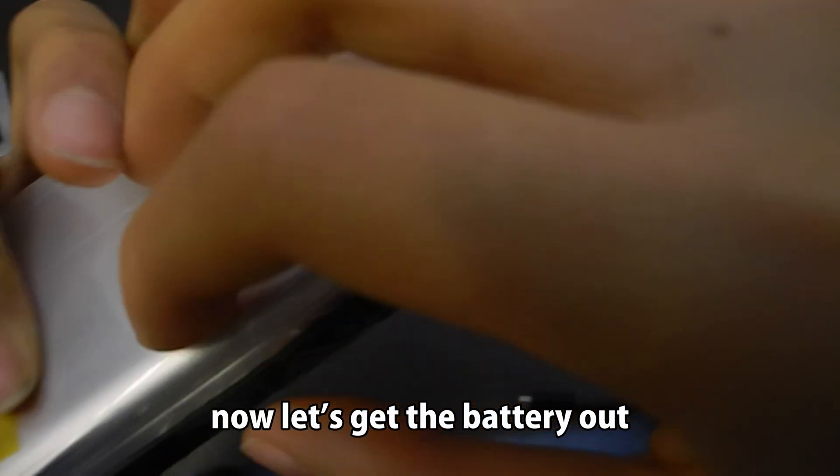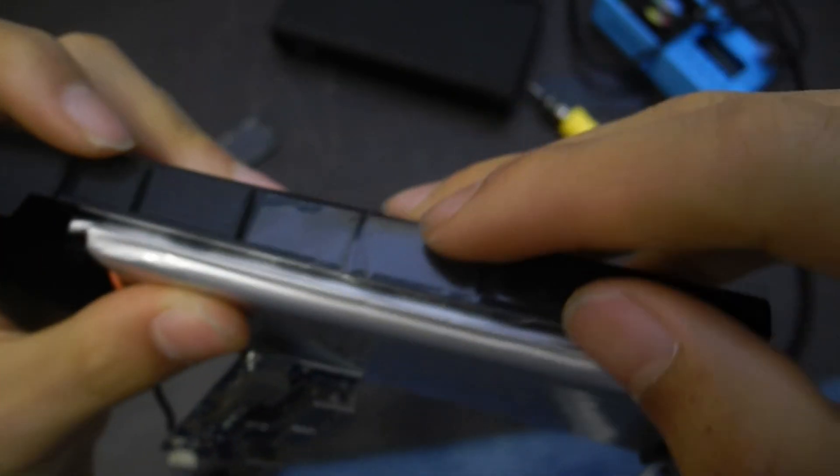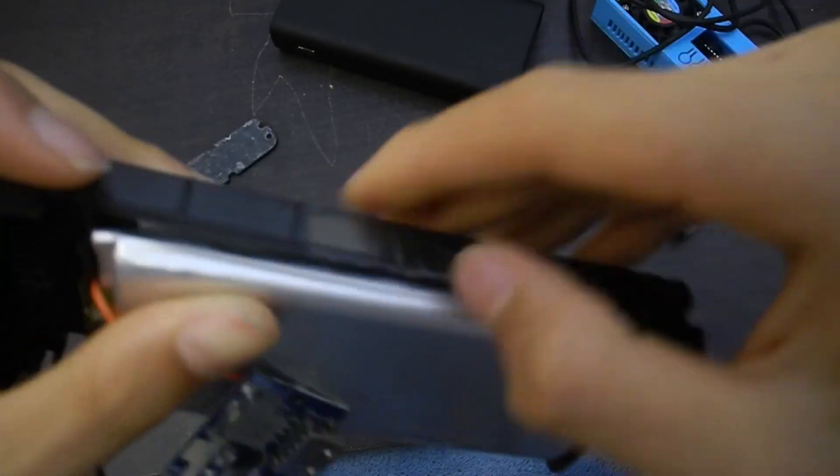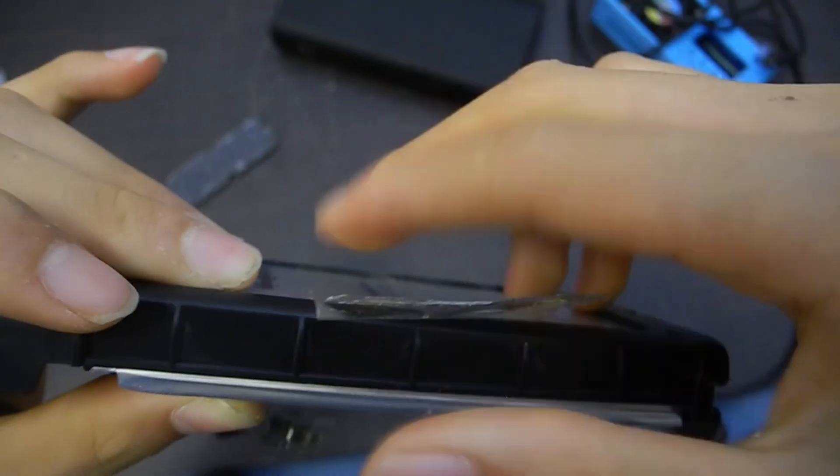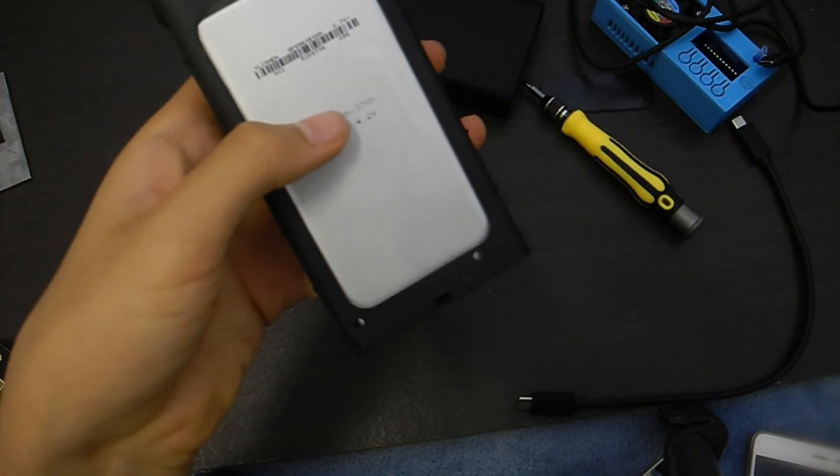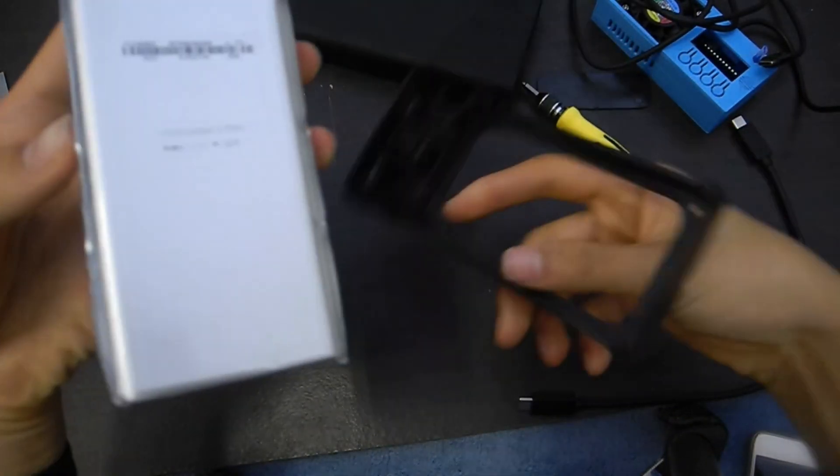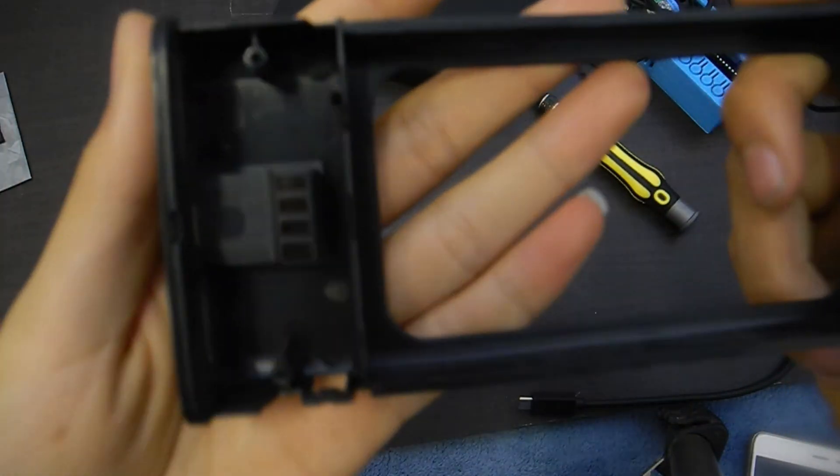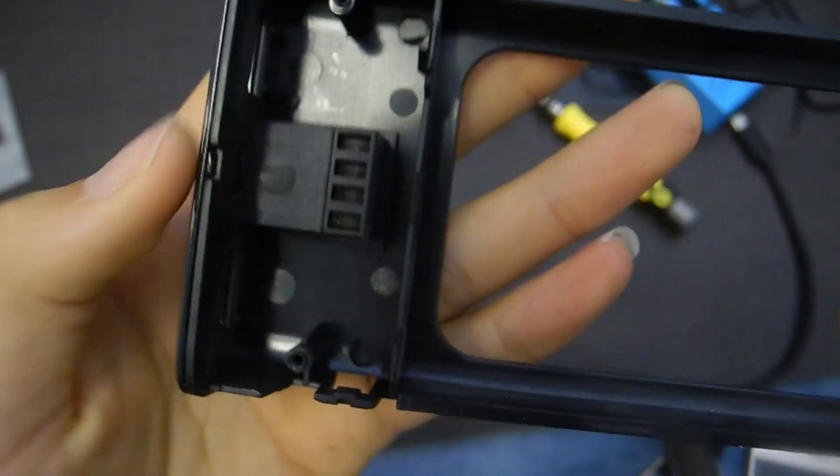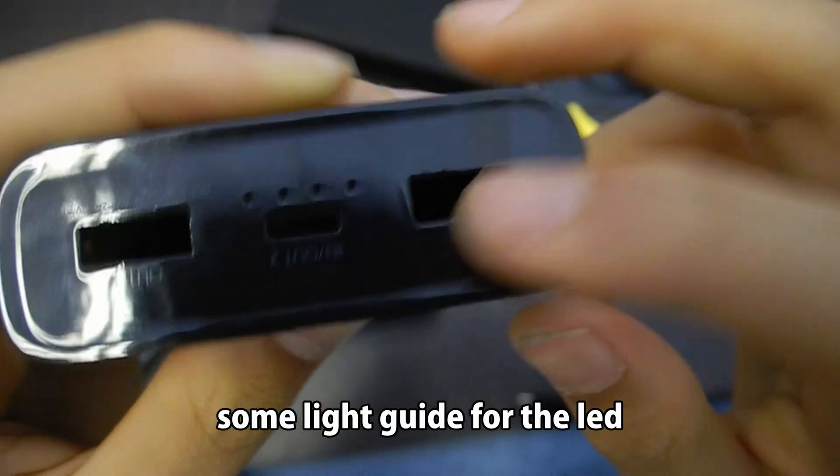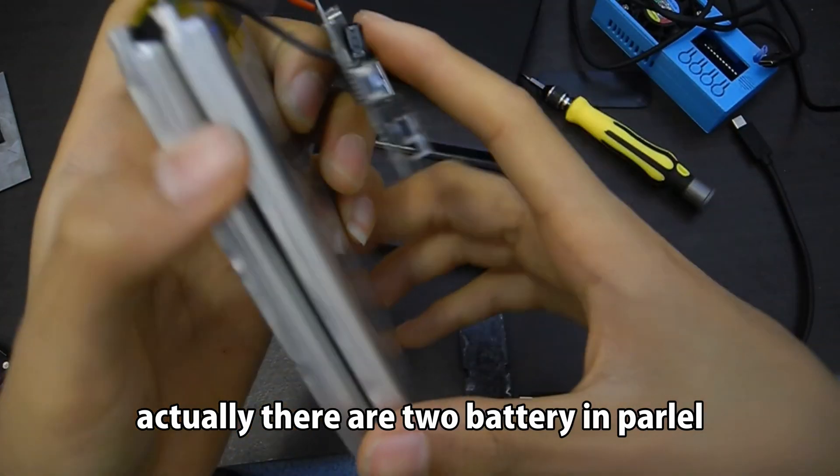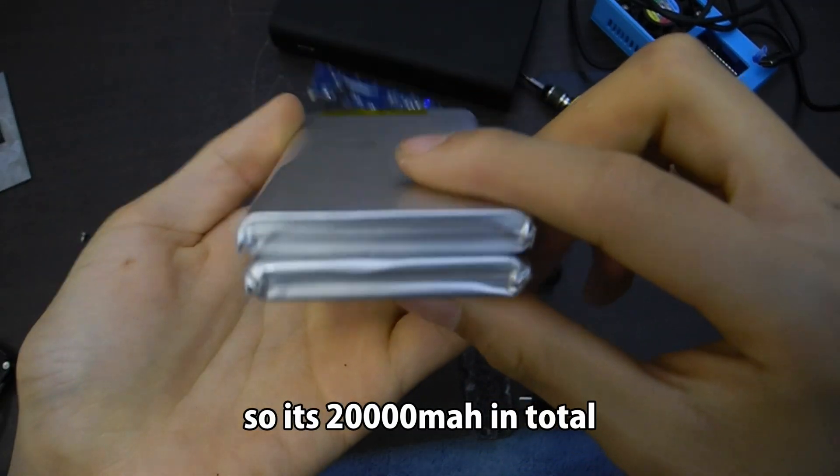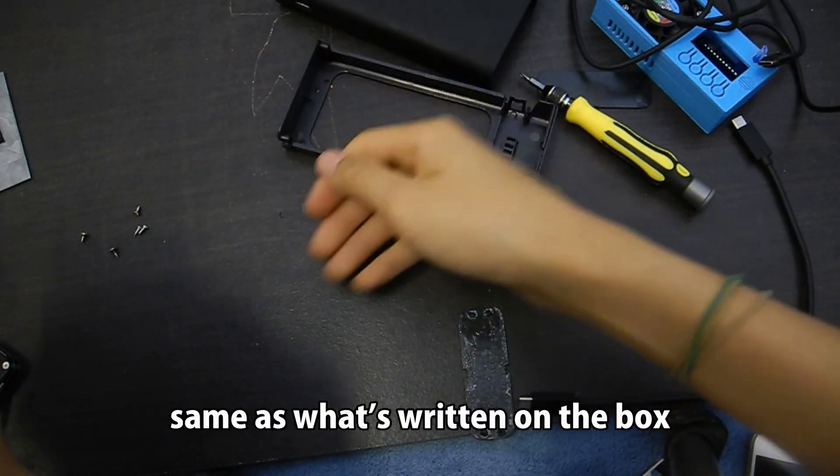Now let's get the battery out. Some light guide for the LED. Actually there are two batteries in parallel. So it's 20,000 mAh in total. Same as what's written on the box.